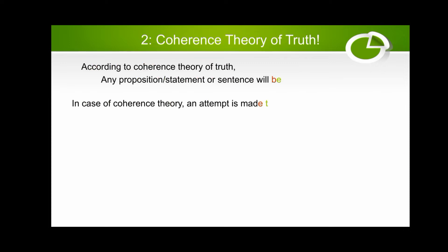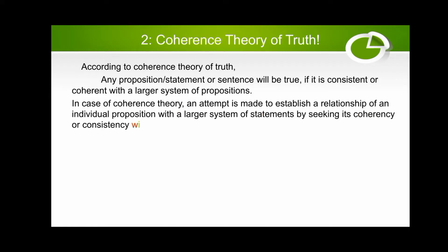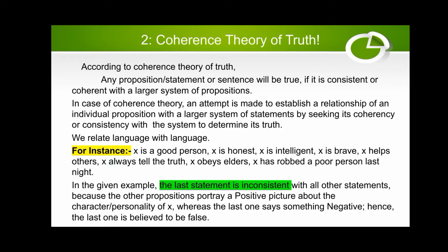Coherence theory of truth: according to the coherence theory of truth, any proposition, statement, or sentence will be true if it is coherent with a larger system of propositions. In the case of coherence theory, an attempt is made to establish a relationship of an individual proposition with a large system of statements by checking its coherency or consistency with the system to determine its truth. We relate language with language.